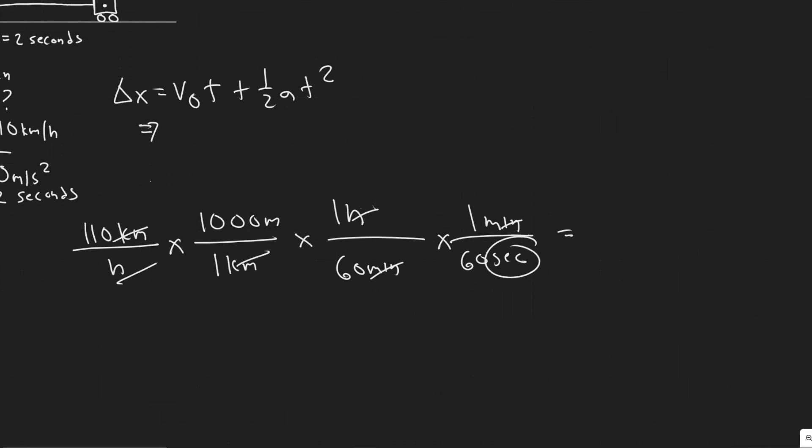And then now it's just a matter of plugging it in. So we have seconds, right, meters per second now. So we have the correct unit. So 110 times 1000. And then you're dividing by 60, and then dividing by 60 again. So 30.556, I'll round it to.